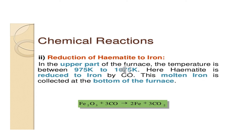The third important reaction is the reduction of hematite to iron. In the upper part of the furnace, the temperature is maintained between 975 Kelvin to 1075 Kelvin. Here, hematite, that is Fe2O3, is reduced by carbon monoxide to iron, and this molten iron is collected at the bottom of the furnace. The chemical reaction is: Fe2O3 + 3CO → 2Fe + 3CO2. Here Fe³⁺ is reduced to Fe.